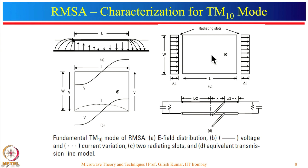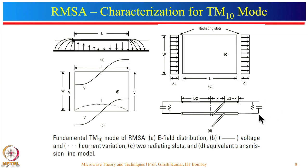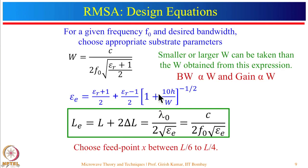The rectangular microstrip antenna can also be modeled as a transmission line. The fundamental mode can be modeled this way because there is no field variation along the width. The length is approximately lambda/2, and we have a radiation resistance in parallel with capacitance (the fringing field capacitance) at each of the two radiating edges.